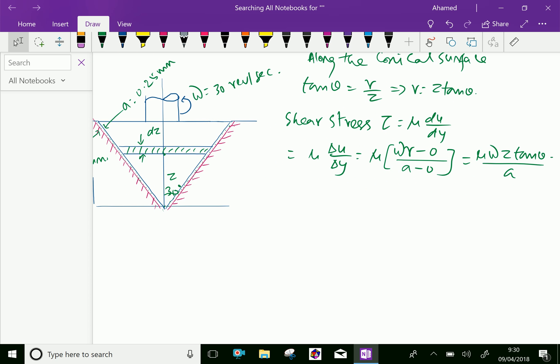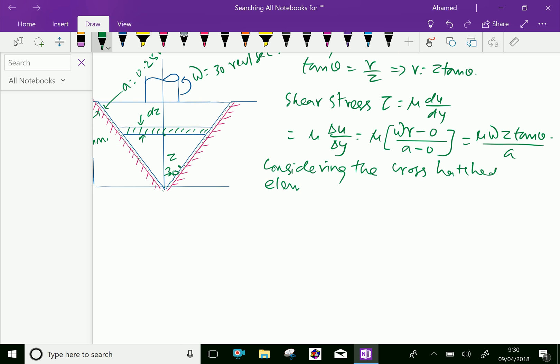Considering the crosshatch elemental area dA, which is equal to 2 pi R dZ over cos theta by geometry.